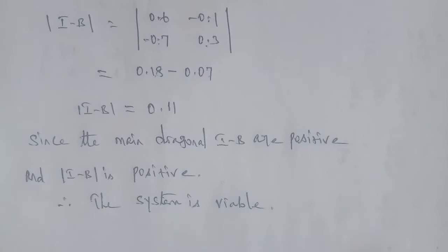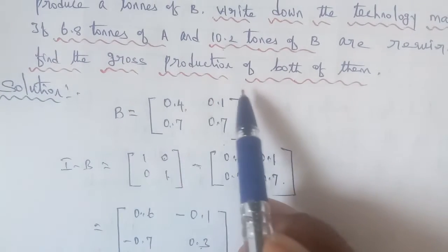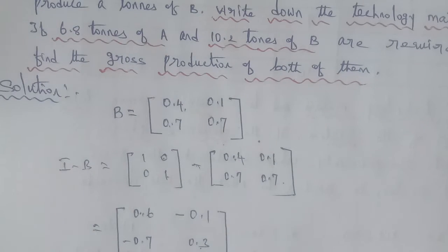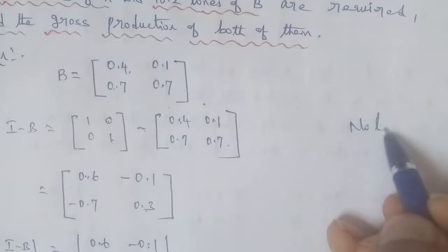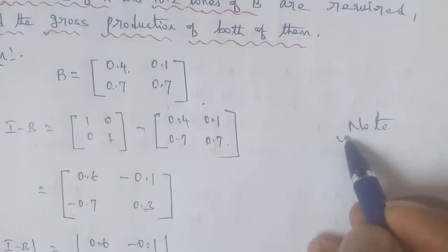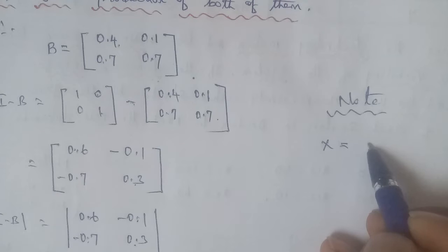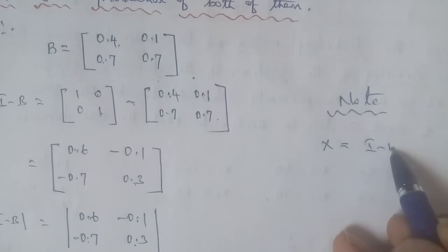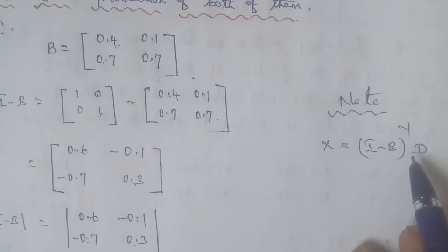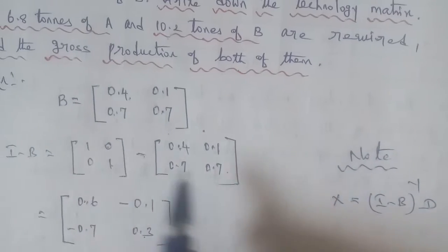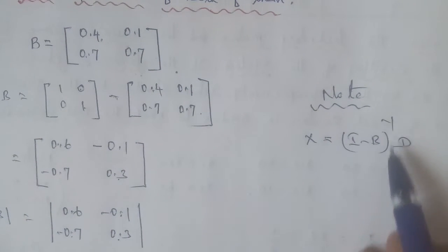Now we find the gross production. The formula is X = (I − B)^(−1) · D, where D is the demand vector. We need to find (I − B) inverse first.